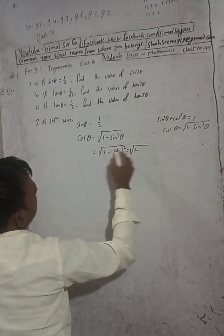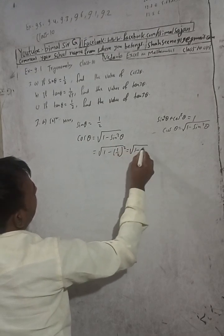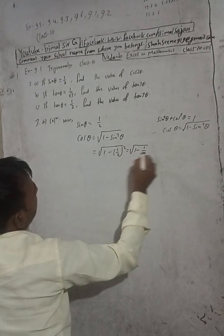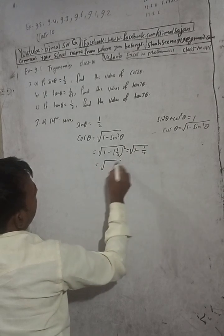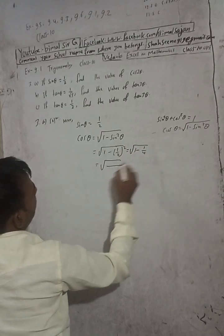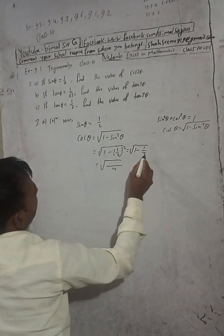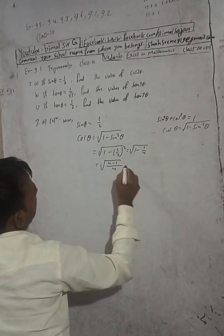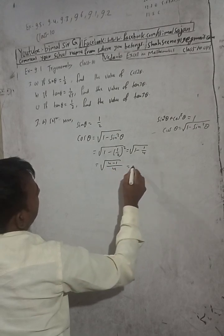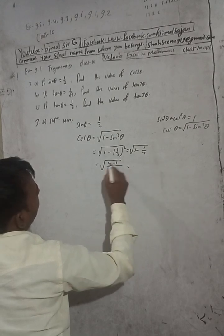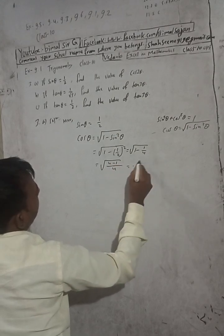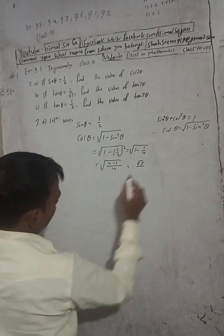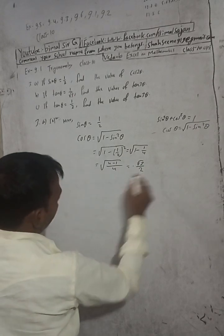1 minus 1 is equal to 1, and 2 is equal to 4. So 4 is equal to 4, and 4 is equal to 4 minus 1. Then for minus 1, root 3 by root of 4 is 2, giving root 3 by 2.